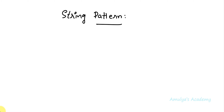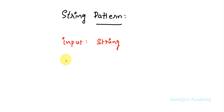Hello guys and welcome to Python programming tutorials by Amulyas Academy. Today in this tutorial we will write a Python program to print string patterns. We will take a string as input and print its characters or alphabets in different shapes. The input is a string entered without spaces, and the output will show the characters in shapes like right triangle, pyramid, etc.